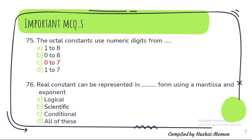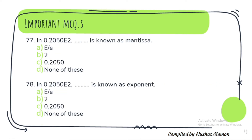Question 76: The real constant can be represented in scientific form using a mantissa and exponent — correct option is scientific, option B. Question 77: In 0.2050E2, what is known as mantissa? The correct option is 0.2050. Question 78: In 0.2050E2, what is known as exponent? That is 2.